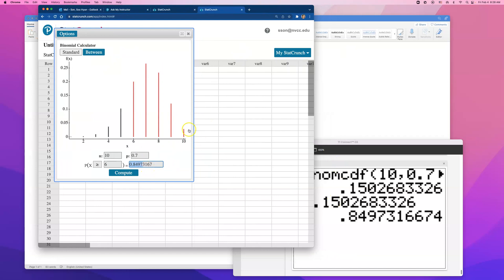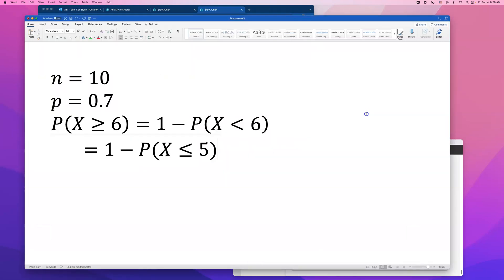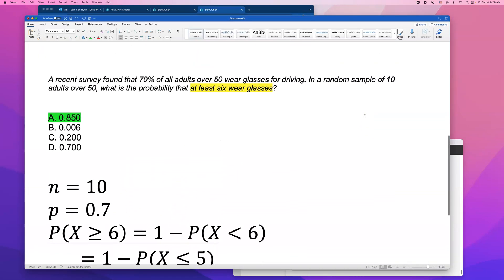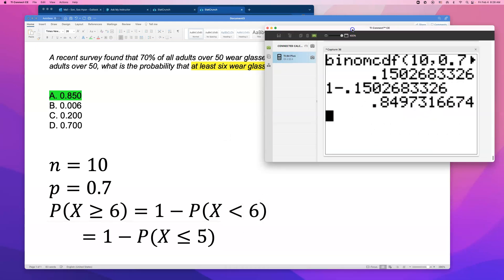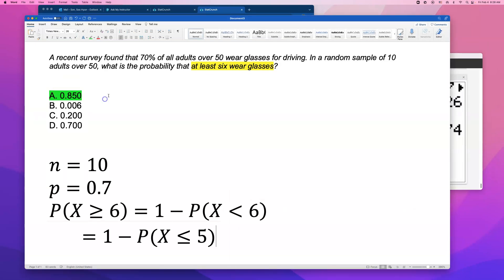Two different technologies. I think StatCrunch is easier, but when you guys are taking your final exam on lockdown browser, you're only allowed to use handheld calculators. So definitely, from now on, before your final, practice using binomial CDF or normal CDF on your TI-84. Okay, but that is the answer. That's how you find the answer to this binomial problem.